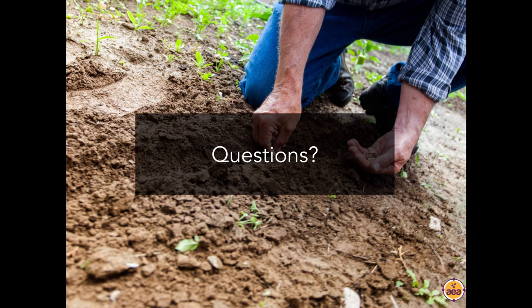Question from Steven: at a conference, Bob Wilt said that foliars work by sending the applied nutrient out through the roots as exudates that excite biology to go get the nutrient from the soil, and that if the nutrient from the foliar isn't in the soil, it won't work. I don't know the answer to that, Steven. That's the first time I've heard of that idea.